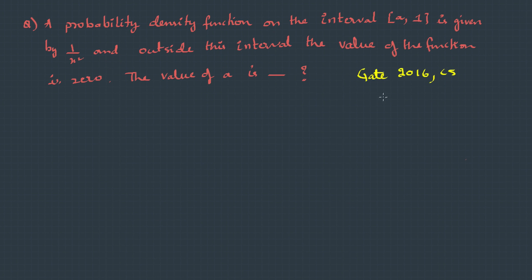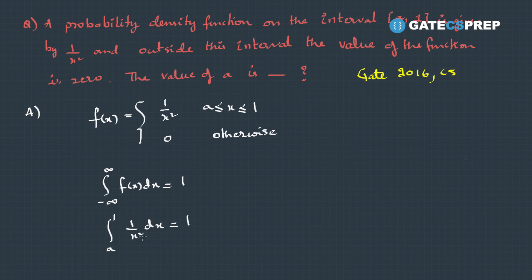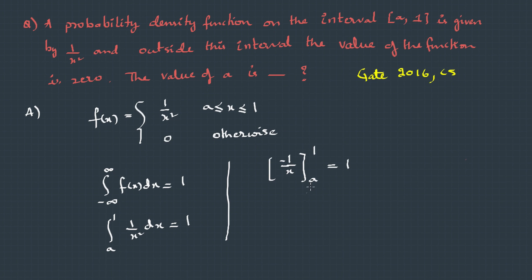Here is a question asked in GATE 2016 Computer Science. A probability density function on the interval a to 1 is given by 1/x², and outside this interval the value is 0. The value of a is? To solve this, f(x) = 1/x² on [a,1] and 0 otherwise. We use the rule that integral from a to 1 of 1/x² dx must equal 1. Integrating gives [−1/x] from a to 1, and substituting these values, we get a = 1/2, which is 0.5.